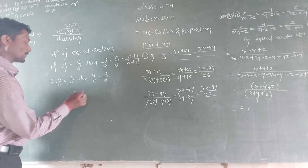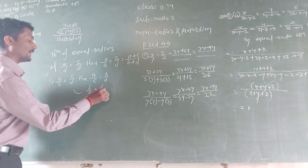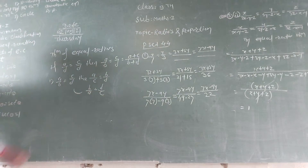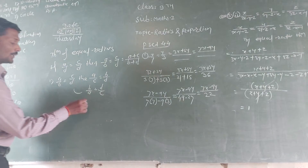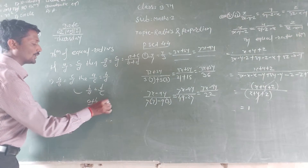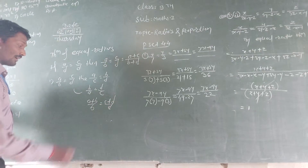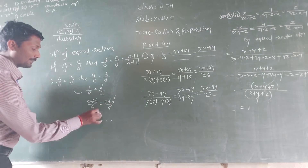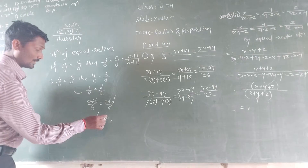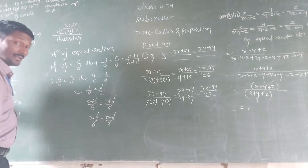Alternendo: a upon b is equal to b upon c. Componendo: a plus b upon b is equal to c plus d upon d. Dividendo: a minus b upon b is equal to c minus d upon d.